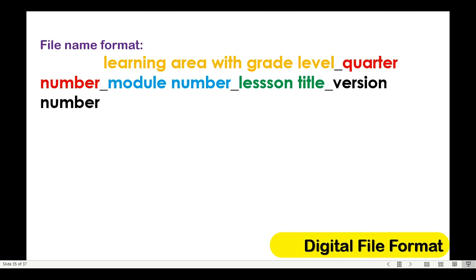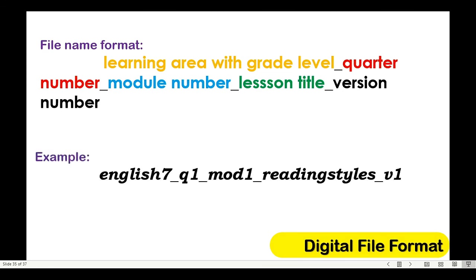When saving your learning module file, you need to follow the prescribed file format. Look at the example below. Take note that V at the end of the file name stands for a version followed by a number. If you will submit your module for the first time for quality assurance, then name it as version 1. When it comes back for revision, you rename it to version 2.